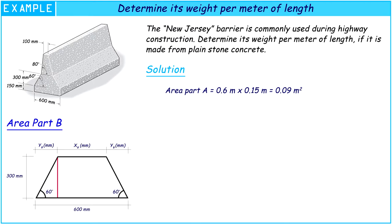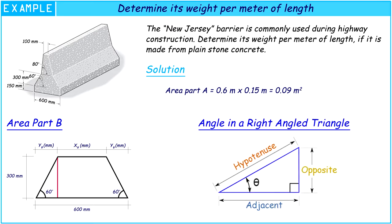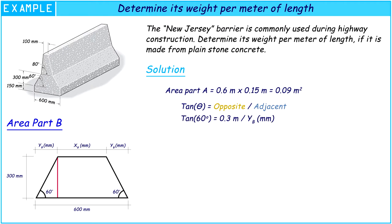For Part B, the first thing that we must know is XB. Because it is the trapezium, from an angle in a right angle triangle method, we all know that tangent alpha is equal to the dividend of opposite and adjacent. So we will get the result of YB from this formula.